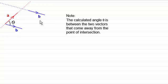And so I've got this note here: Note that the calculated angle theta is between the two vectors that come away from the point of intersection.